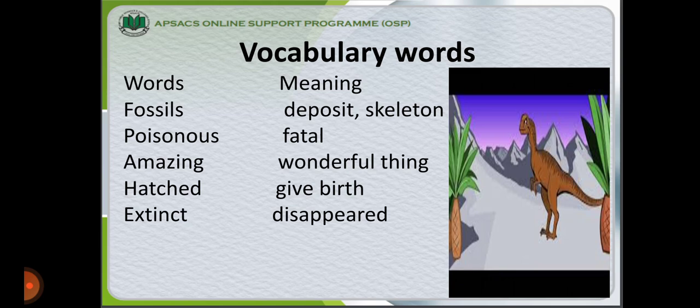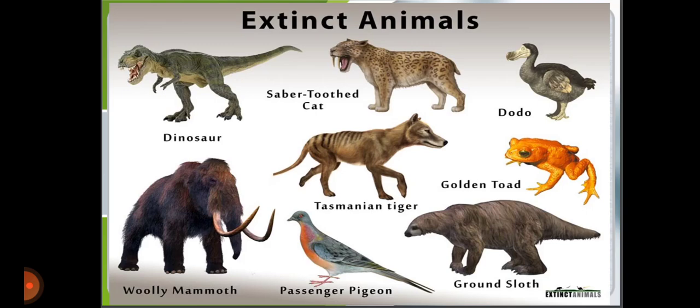Dear students, you will also learn these vocabulary words and their meanings: Fossil — deposit or skeleton; Poisonous — fatal; Amazing — wonderful thing; Hatched — give birth; Extinct — disappeared. These are pictures of extinct animals that have disappeared from this world: Dinosaur, Saber-toothed cat, Dodo, Tasmanian tiger, Golden toad, Woolly Mammoth, Passenger Pigeon, and Ground Sloth.